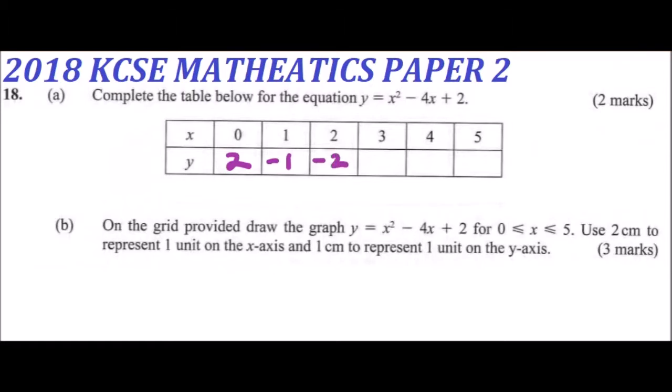Then you have, when x is 3, you substitute, you get x is minus 1. When x is 4, you get y is 2. And when x is 5, you get y is 7. Those are the values that you get. And by filling the correct values, you get yourself 2 marks.